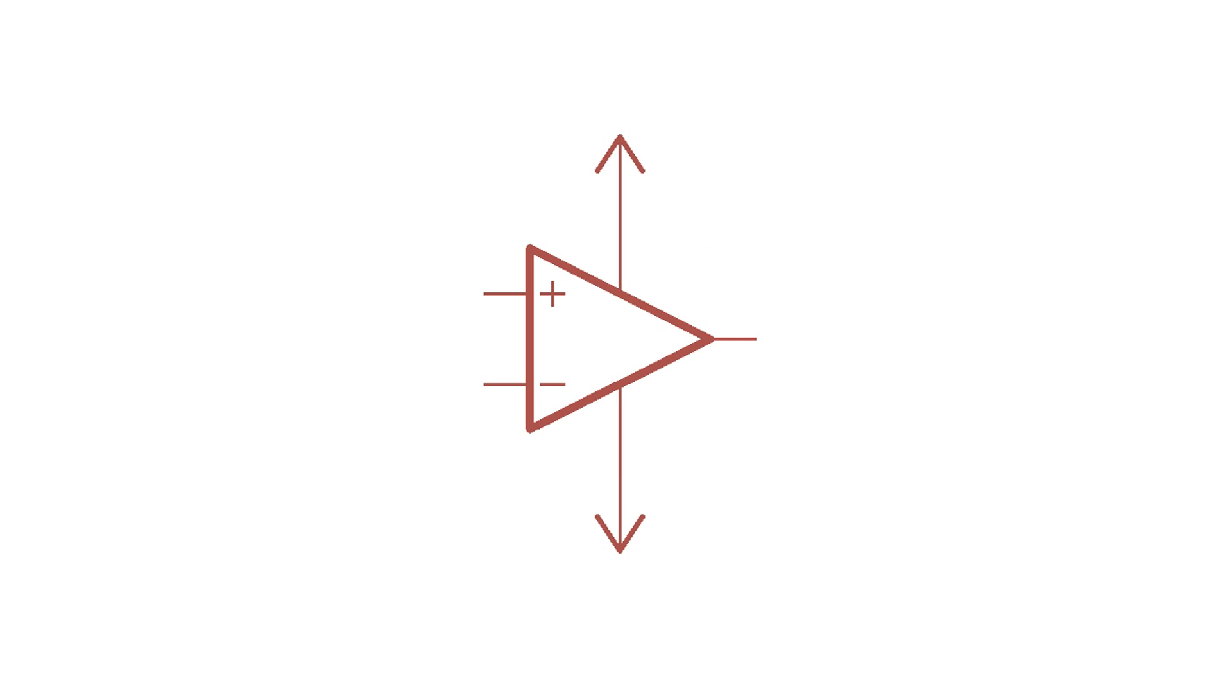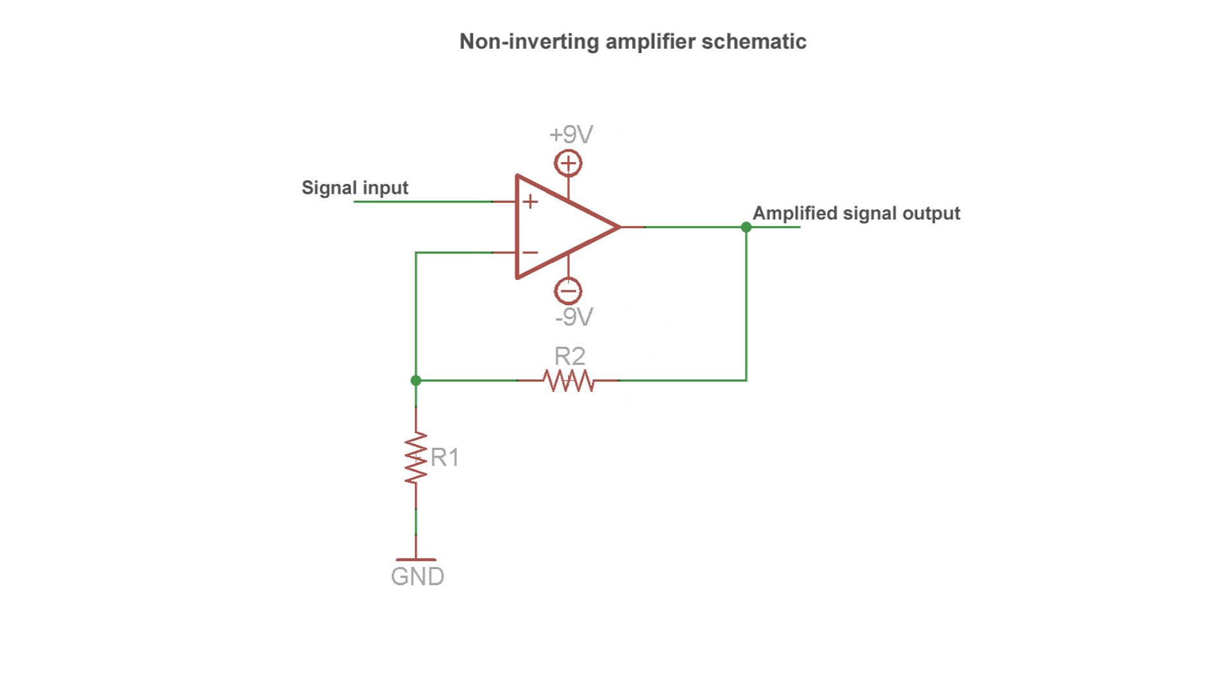Now this thing alone isn't going to be able to amplify anything. You are going to have to add a couple of other components to configure your op-amp to have the right gain. I am going to show you one of the simplest amplifier circuits you can build, the classic non-inverting amplifier.